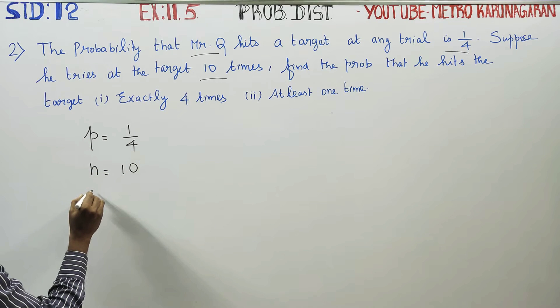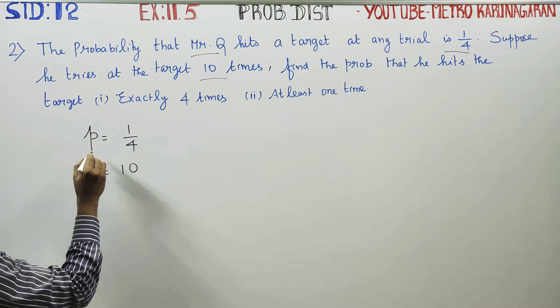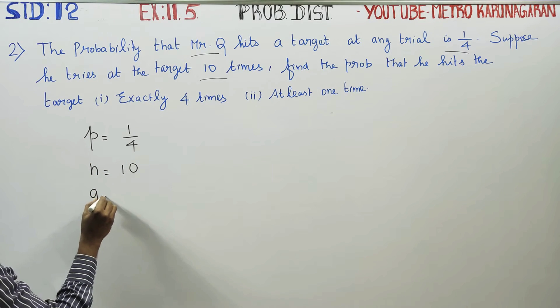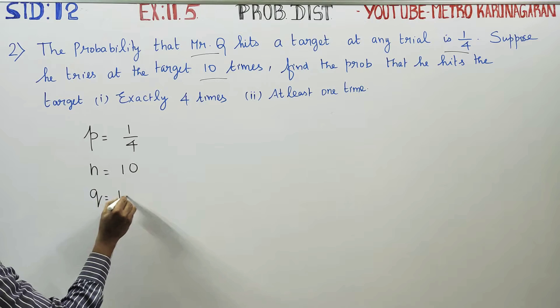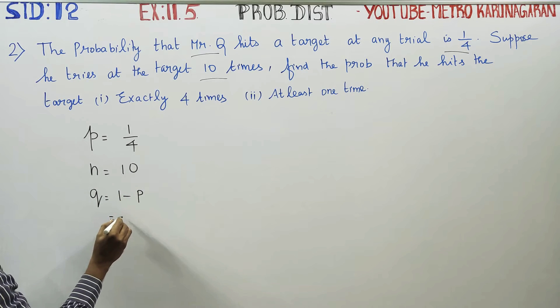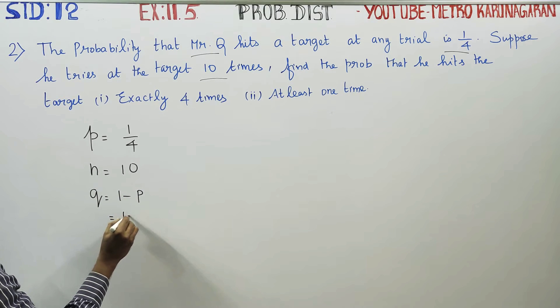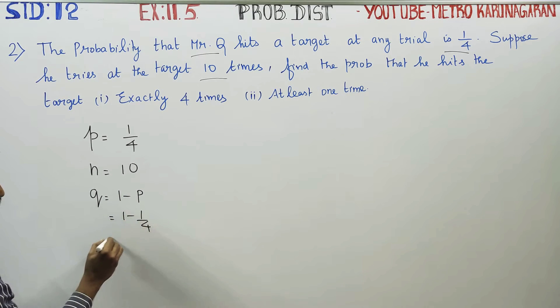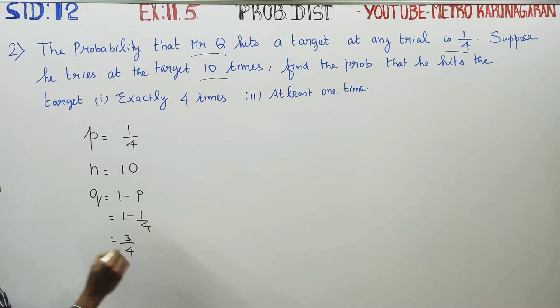Now, P and Q are ready. Q is the formula 1 minus P, that is 1 minus 1 by 4. Solving this, you will get Q equals 3 by 4.